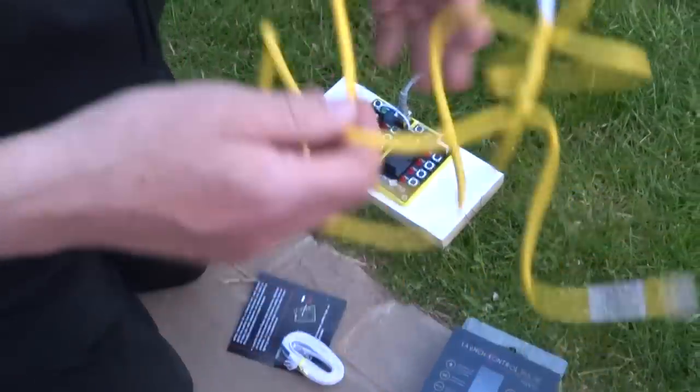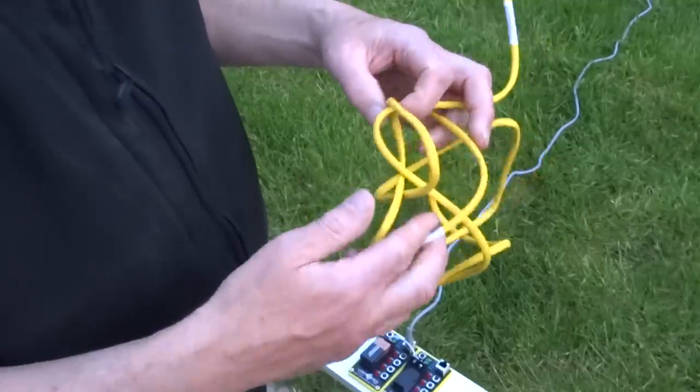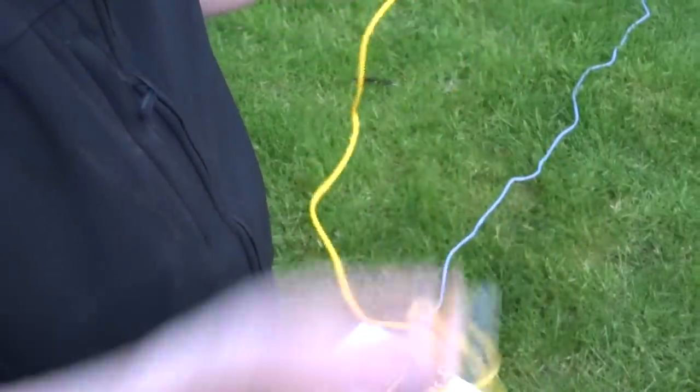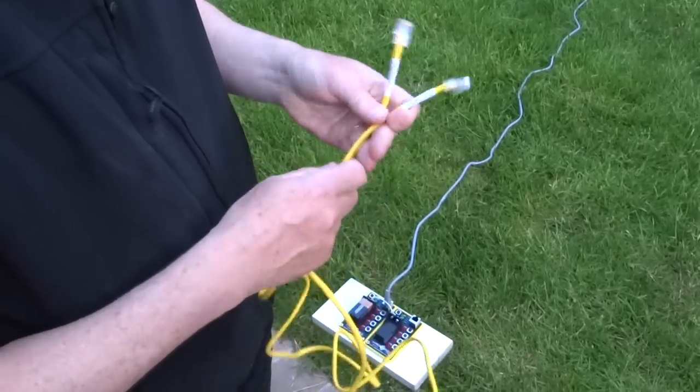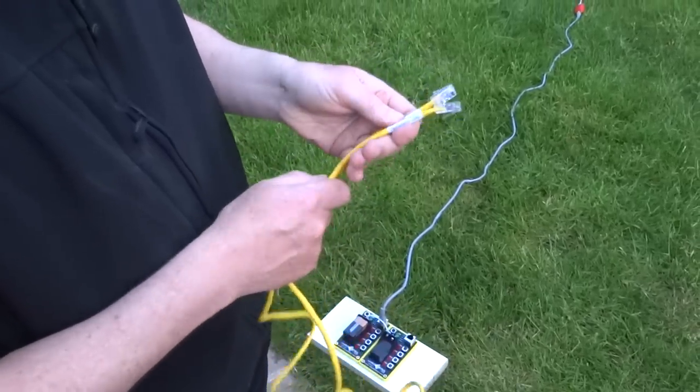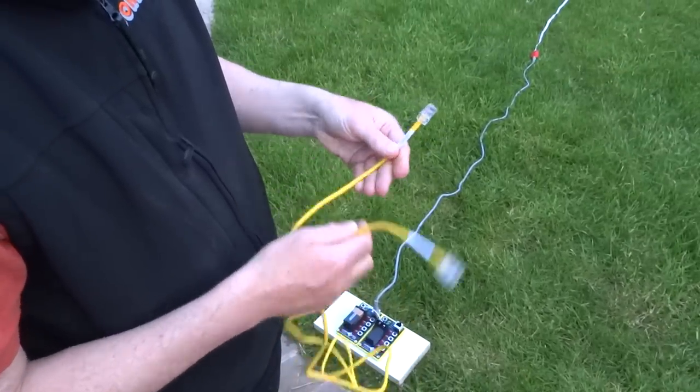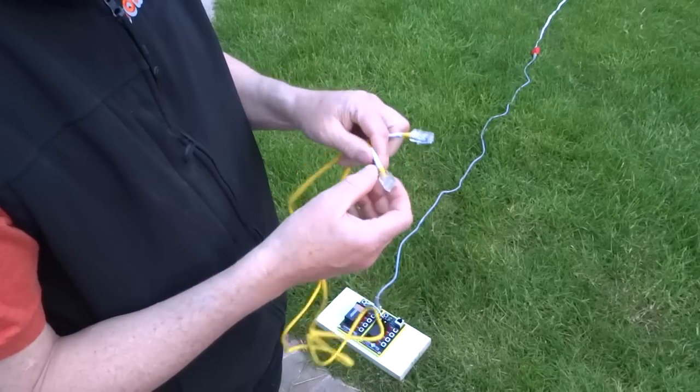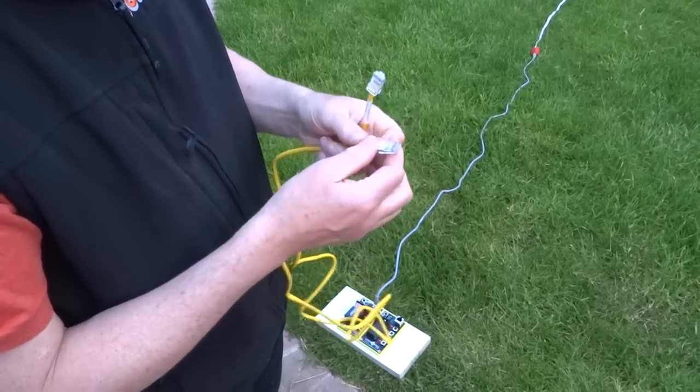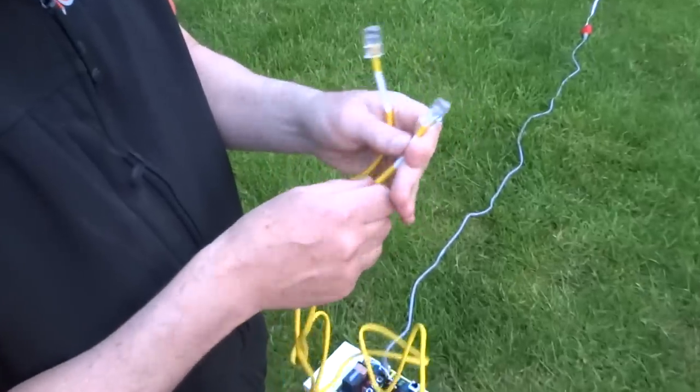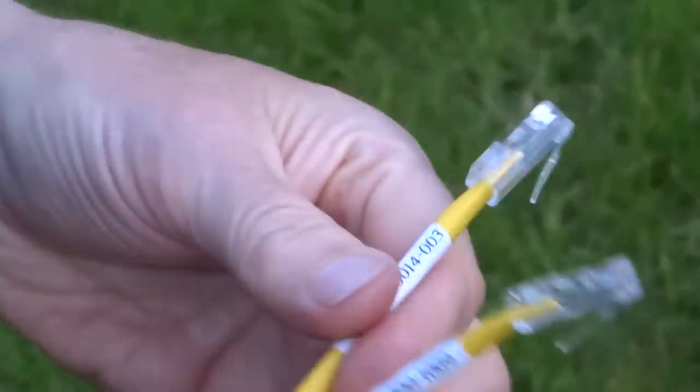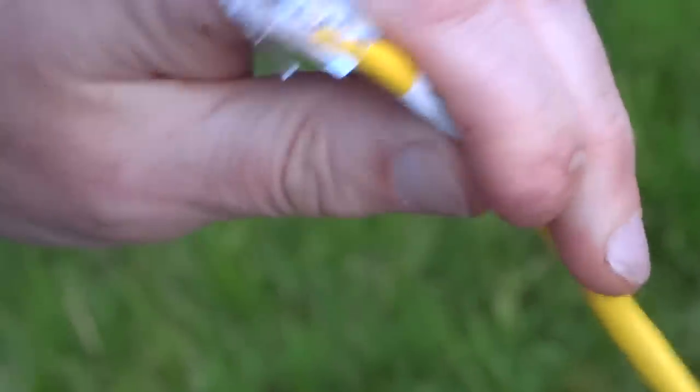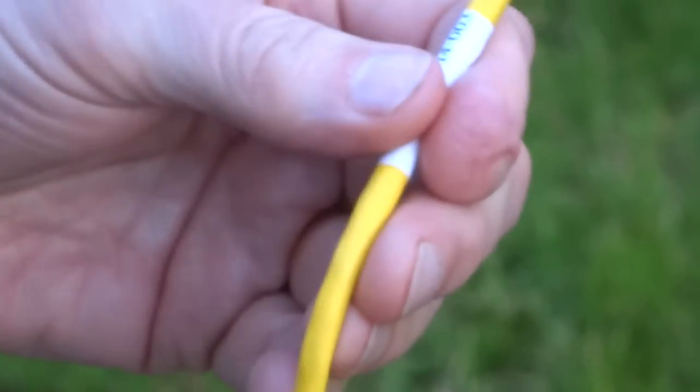The most important thing that you will need is a Cat5 cable. The cable the basic set comes with isn't long enough to fire the fireworks from a distance away. So this is just a standard computer Cat5 cable, however you do need a copper cable. A non-copper cable will not work although it will fit into all the plugs. Only the copper cables will light the fireworks.